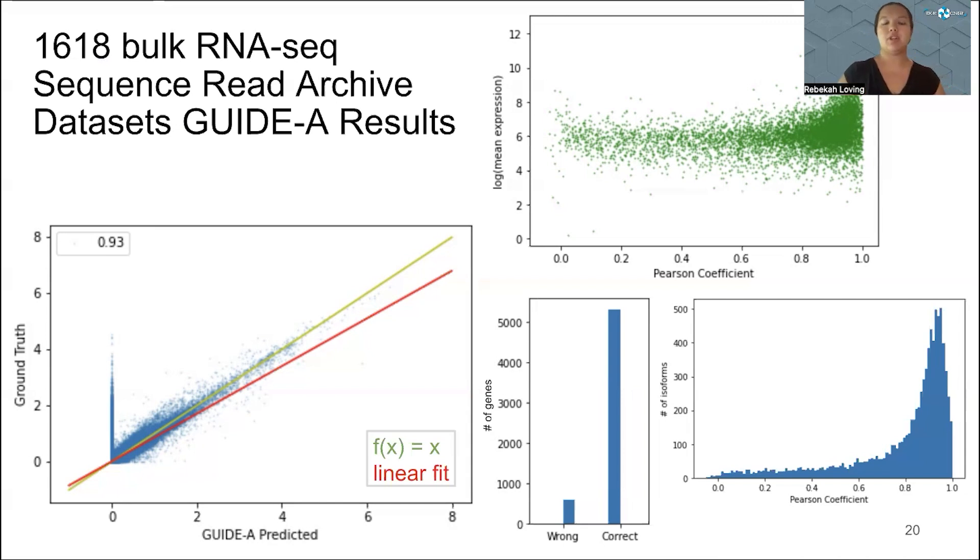Our test data set was 1618 bulk RNA-Seq Sequence Read Archive data sets. And these are GUIDE-A results. In particular, I want to note that it does a really good job with predicting...